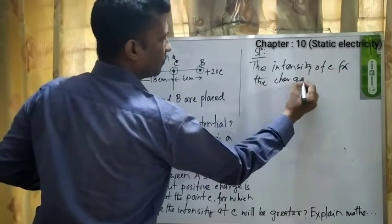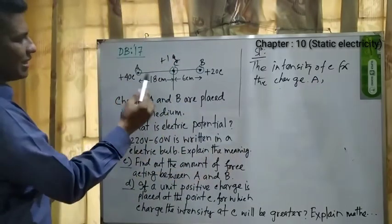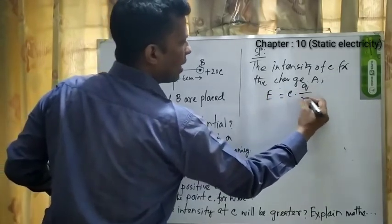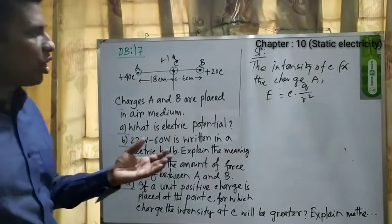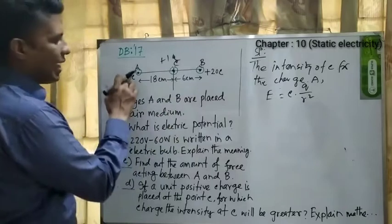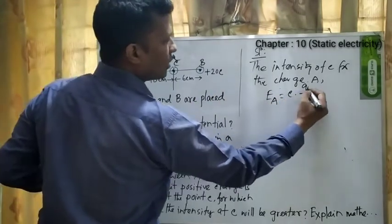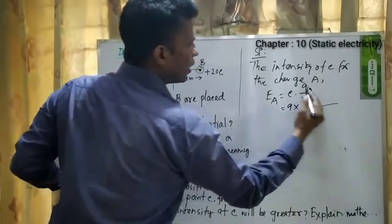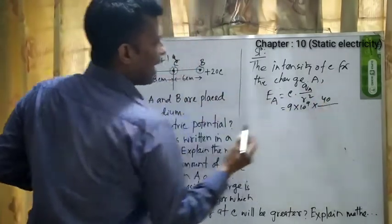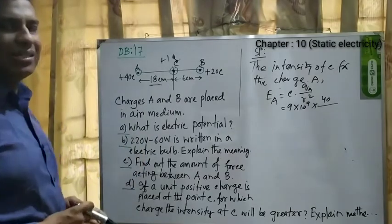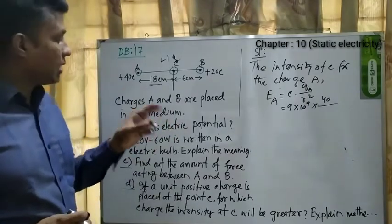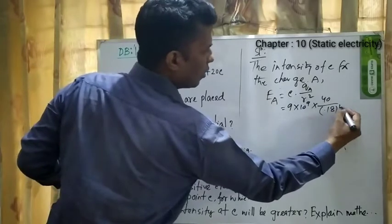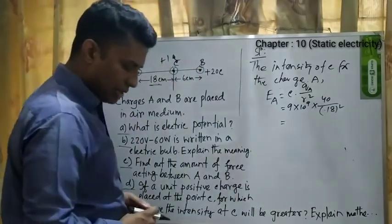For charge A, the intensity at C uses the equation E = k × Q / r². So E_A = k × Q_A / r² = (9 × 10⁹ × 40) / (0.18)². The result after calculation is 1.1 × 10¹³ Newton Coulomb⁻¹, which is the unit of electric field intensity.